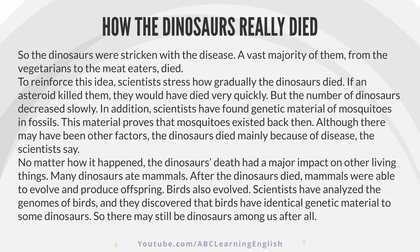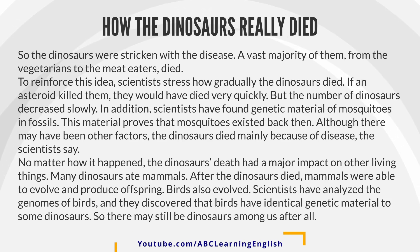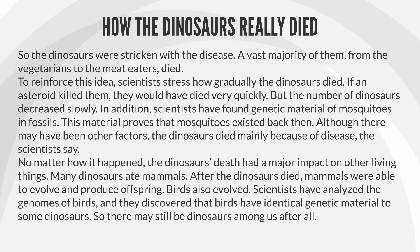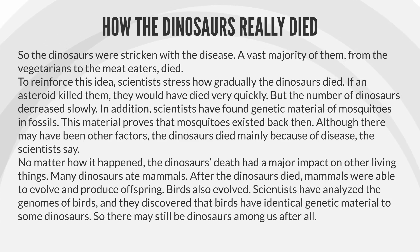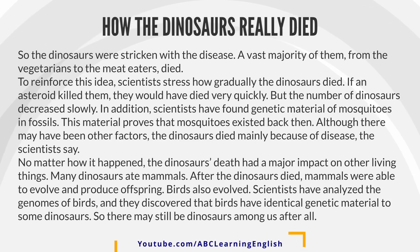A vast majority of them, from the vegetarians to the meat-eaters, died. To reinforce this idea, scientists stress how gradually the dinosaurs died. If an asteroid killed them, they would have died very quickly. But the number of dinosaurs decreased slowly.